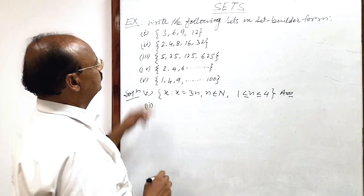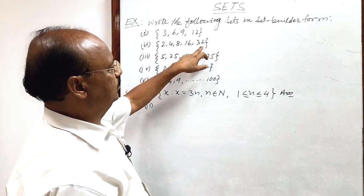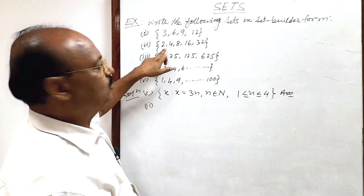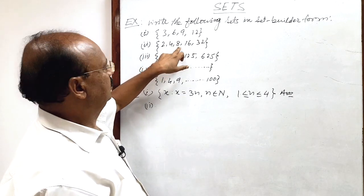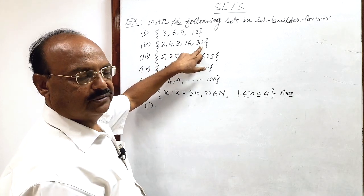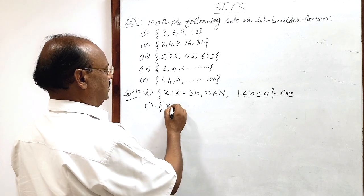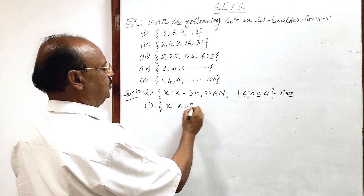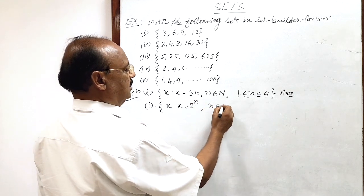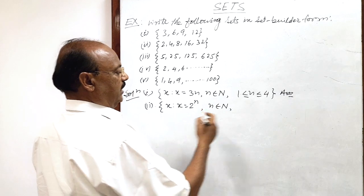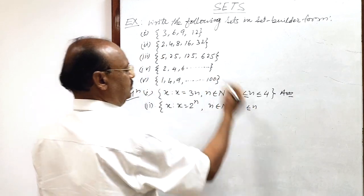Now, second question: 2, 4, 8, 16, 32. This is 2 to the power 1, 2 squared, 2 cubed, 2 to the power 4, 2 to the power 5. So in set builder form, we will write x such that x is equal to 2 to the power n, where n is a natural number and n lies between 1 and 5.